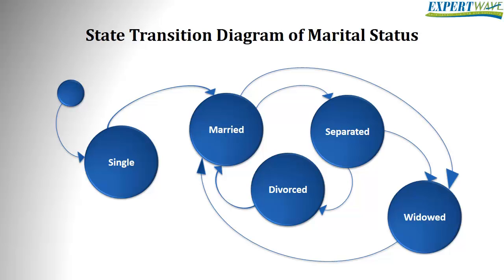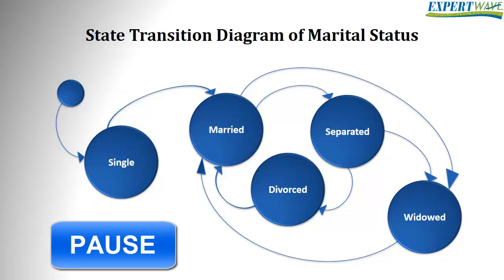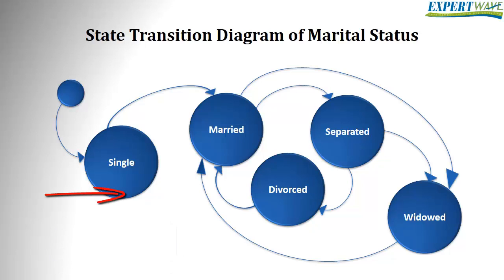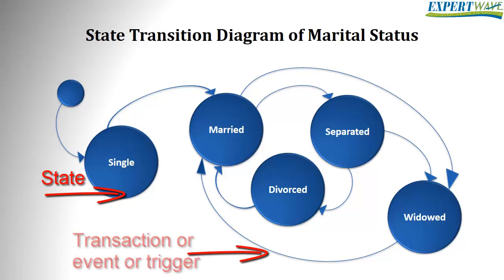This diagram represents a marital status system. Take a look at it for a second to see if you can get the idea of such diagrams without me telling you anything. Circles represent states and arrows represent transitions or events that would happen on a specific state, which will cause that state to change.